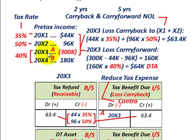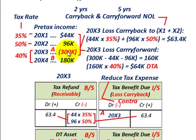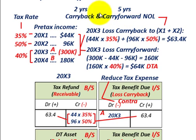We're going to be looking at year 20x3, where we're going to have a net operating loss of $300,000. Everything is shown in thousands of dollars. We're going to be able to take this $300,000 net operating loss and carry it back two years, and then if there's anything remaining, we'll be able to carry it forward. Let's first deal with the loss carry back.